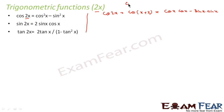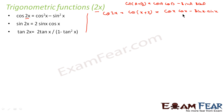So this will become cos of x into cos of x minus sin of x into sin of x. That's the formula we had. The formula: cos of a plus b equals cos of a into cos of b minus sin of a into sin of b. Here both a and b are x, so this becomes cos squared x minus sin squared x. So we have proved that cos 2x equals cos squared x minus sin squared x.